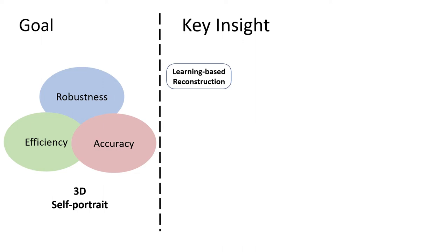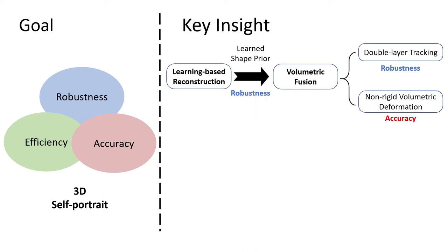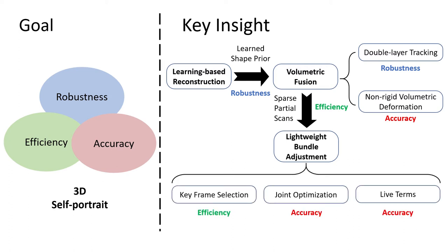Our insight is that learning-based reconstruction can provide shape prior for more robust double-layer tracking, and the proposed non-rigid volumetric deformation refines the shape priors simultaneously, so that we can fuse sparse and large partial scans for bundle adjustment, which reduces the optimized variables significantly. Finally, we propose a lightweight bundle adjustment that involves keyframe selection for efficiency, as well as joint optimization and live terms to further improve accuracy.